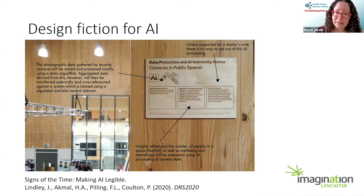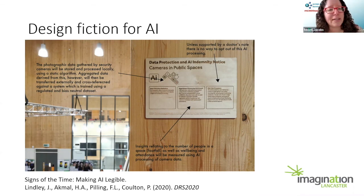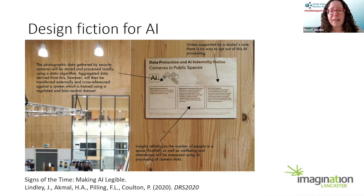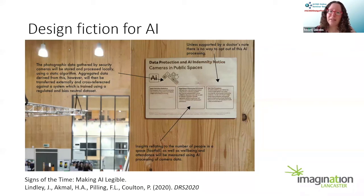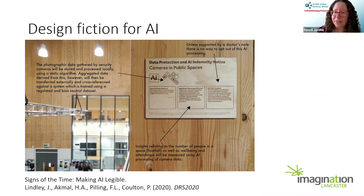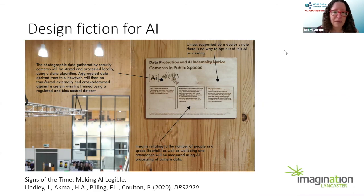There were signs in other places too — one on the toilets saying DNA data would be collected if you used them. These aren't things actually happening, but these fictions start to question plausible aspects of AI use and really get you thinking: would you be comfortable with that? There's no way to opt out if AI is being used for analysis in a public space.